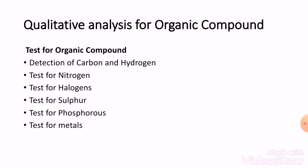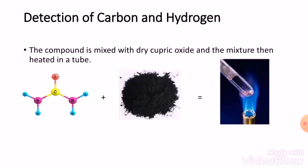The next test is the test for halogens, performed for the identification of fluorine, chlorine, and bromine — all these elements — if they are present in the organic compound. The next test is the test for sulfur. If sulfur is present, by performing this test you can confirm it. The next test is the test for phosphorus, and the last is the test for metals. In this session, I will explain in detail how to detect carbon and hydrogen.